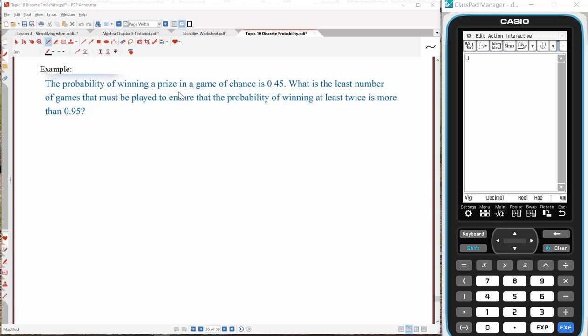A tough problem involving binomial distributions for you rookie players is one like this. The probability of winning a prize in a game of chance is 0.45. What is the least number of games, that is how many trials do I need to run, to ensure that the probability of winning at least twice is more than 0.95?